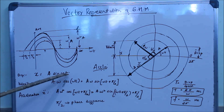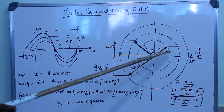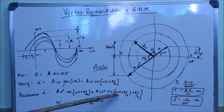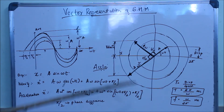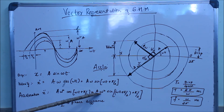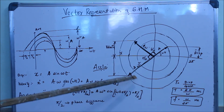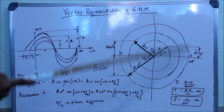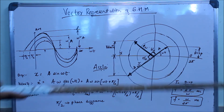So the acceleration is Aω² sin(ωt + π), meaning it is at a phase difference of π with respect to the displacement vector and π/2 with respect to the velocity vector. Its amplitude increases to Aω², which is larger than the velocity vector's amplitude. The full displacement spans 0 to 2π, which is 360°.